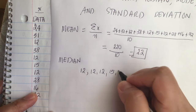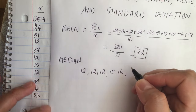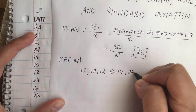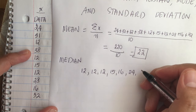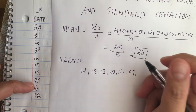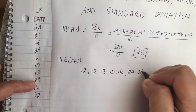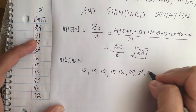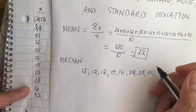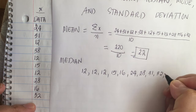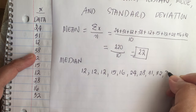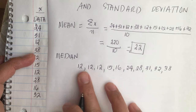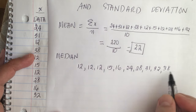Continuing in ascending order: 15, 16, 24, 28, 31, 32, 38. Counting: 2, 4, 6, 8, 10 — so we list all 10 data points in ascending order: 12, 12, 12, 15, 16, 24, 28, 31, 32, 38.